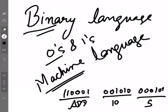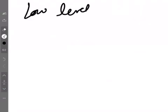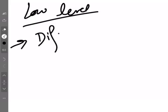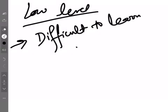So the first problem with binary language is that it is difficult to learn and understand. If you want to learn it as a fresher, it is difficult to learn and understand. The other major problem is that it is machine dependent. Low-level languages are difficult to learn and understand — that is a key drawback.